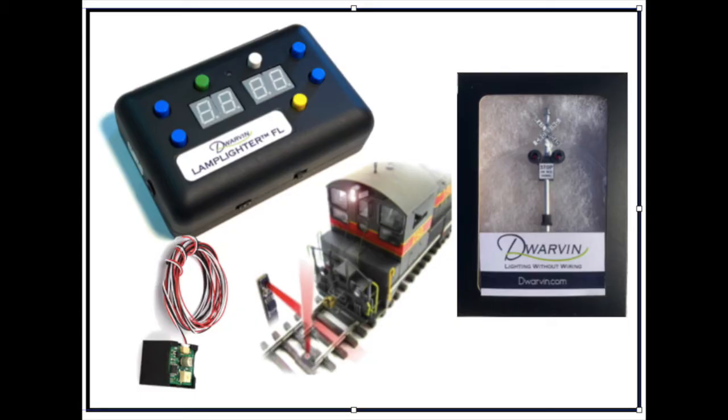So that really is the system you can see it here all other components are just laid out for you so when you go to order just simply select how many detectors you need how many railroad crossings you need.